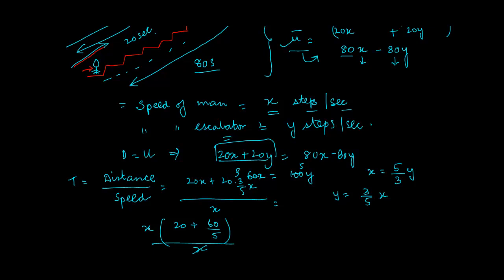Divided by x, x knocks off. This 5 times 20 is 100 plus 60, which is 160 by 5, or 32. So the time taken will be 32 seconds when this thing is stationary.